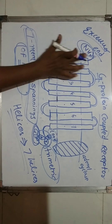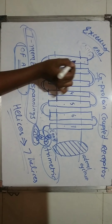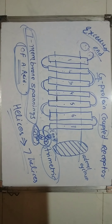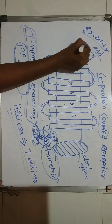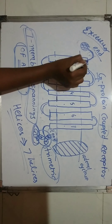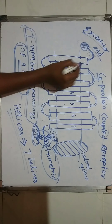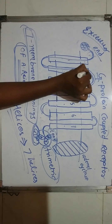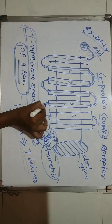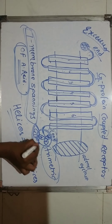Now we will discuss the functioning. The binding site — which is always situated extracellularly for transmembrane receptors — is where the ligand will come and bind. As soon as the ligand binds to the binding site situated on the extracellular end of the membrane, it will transmit a signal. The signal will flow through the receptor and reach our G-protein. This happens in a fraction of seconds.